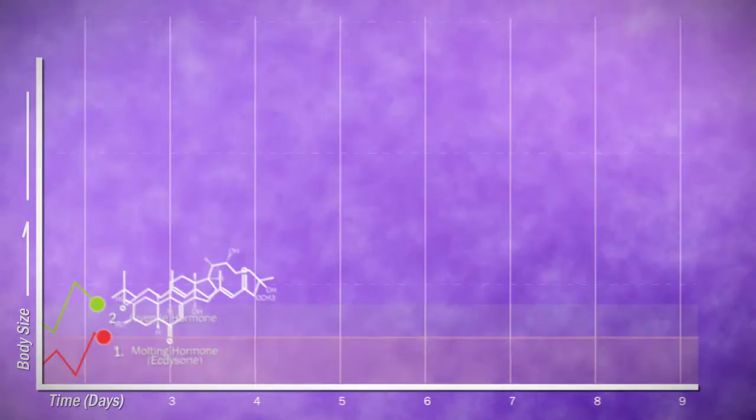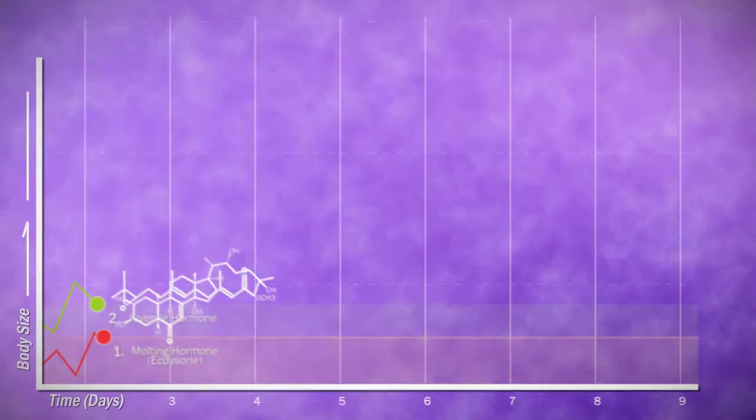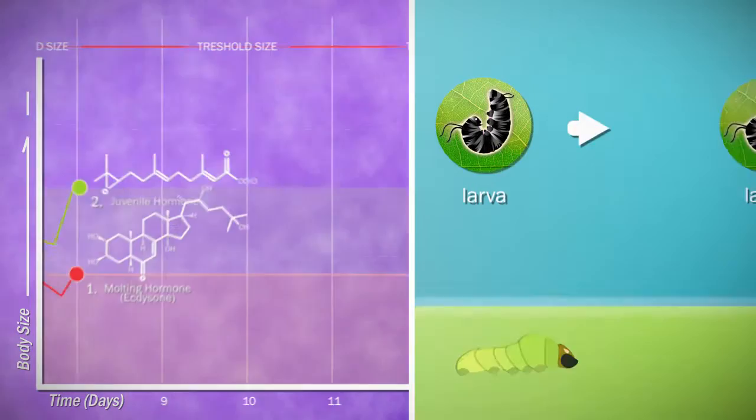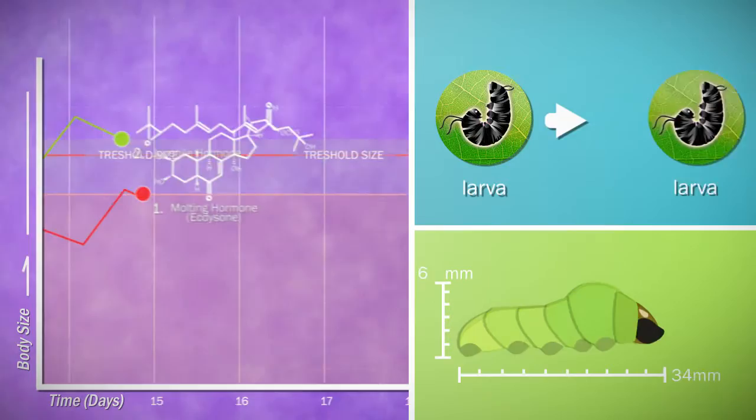This is due to a threshold mechanism by which the juvenile hormone must remain at high concentration in the body to produce a larva-to-larva transformation. However, as the body grows, the hormone becomes diluted and its concentration drops, and in that case a larva-to-pupa transformation will eventually happen.